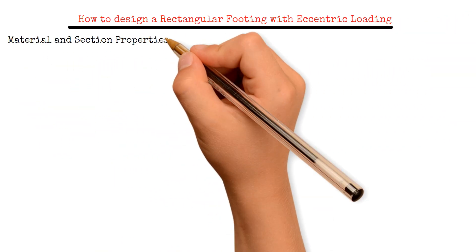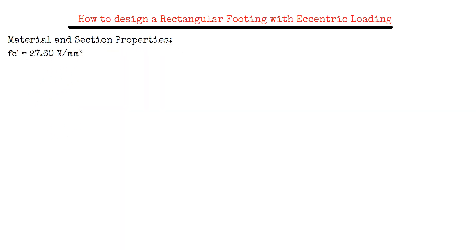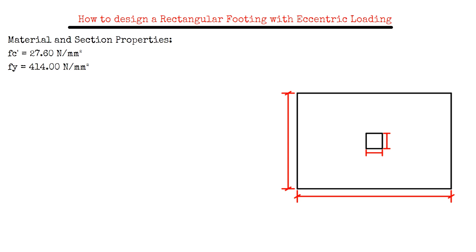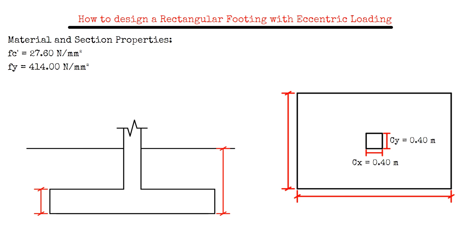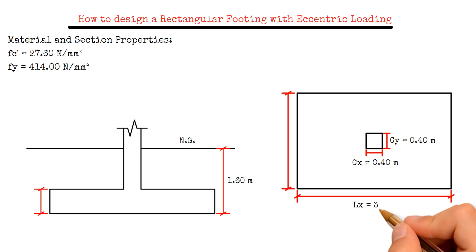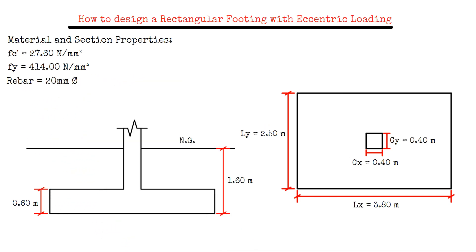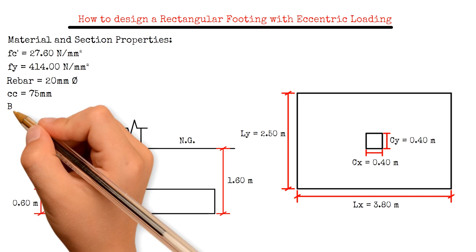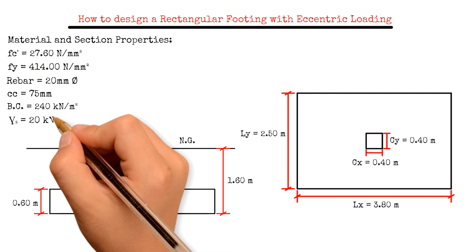For the material and section properties, we have 27.6 N per mm² for the concrete strength. The steel reinforcement yield strength is 414 N per mm². The column section is 400 mm by 400 mm. The base of the footing below the natural ground is 1.6 m. The footing dimensions are 3.8 m by 2.5 m by 0.6 m. We will use 20 mm diameter steel reinforcement with a clear concrete cover of 75 mm. The bearing capacity of the soil is 240 kN per m² and the soil density is 20 kN per m³.